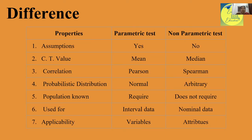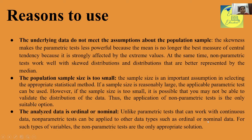You can understand this on a table. Properties: parametric tests versus non-parametric tests. Assumption — known in parametric, unknown in non-parametric. Central tendency — mean for parametric, median for non-parametric. Correlation — Pearson for parametric, Spearman rank order for non-parametric. Probabilistic distribution — normal for parametric, arbitrary for non-parametric. Population distribution — known for parametric, not necessary for non-parametric. Data scale — interval for parametric, nominal for non-parametric. Applicability — variables for parametric, attributes for non-parametric.